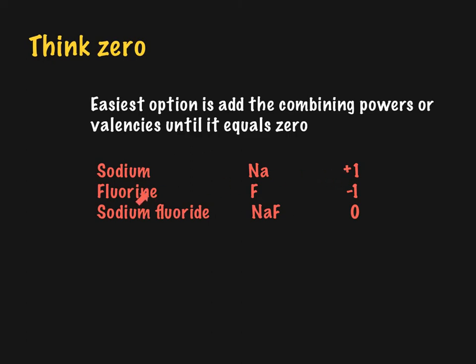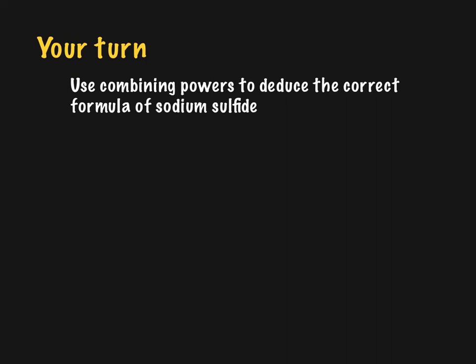Fluorine has a combining power of one. So when I add the two elements together to form sodium fluoride, so I get NaF, if I add the combining powers, I get zero. So that tells me that NaF is the correct formula. That's pretty easy to go through. There are other ways, which we'll go through in another session.